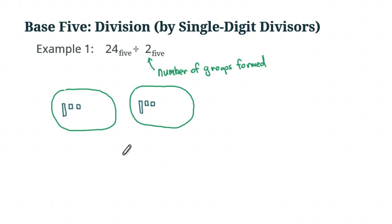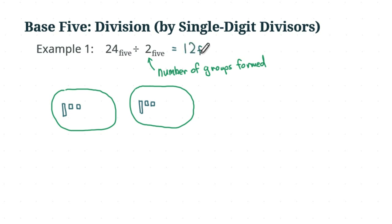The answer is easy to write down — it's just the number of pieces that you have in a group. We have one long and two units, so the answer is 12 base 5. We're done with this example. Next time I'm going to do an example with a remainder. Thank you for watching.